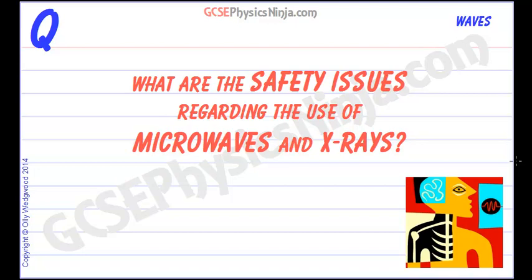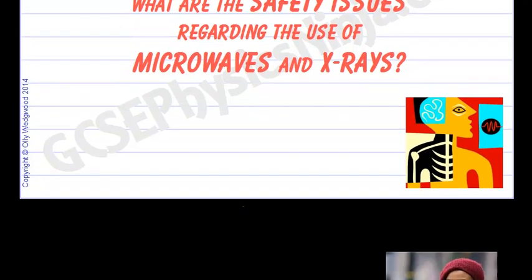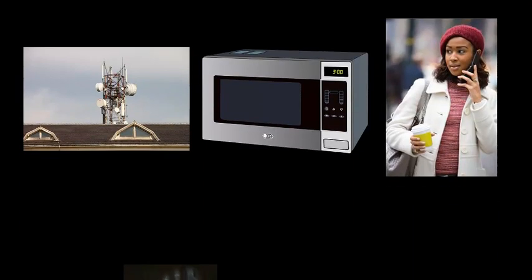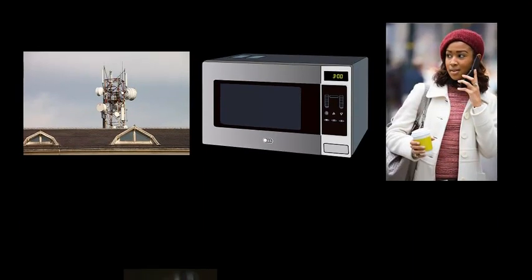Electromagnetic radiation is mostly harmless, however there are certain types that will cause damage to living tissue. So let's take a look at microwaves and x-rays and the safety issues that come up with their use.